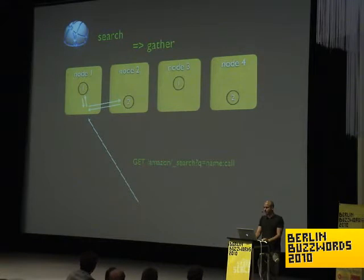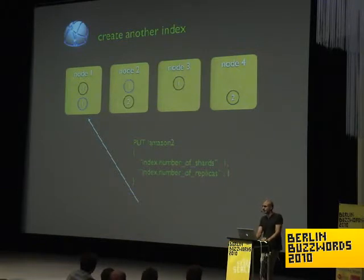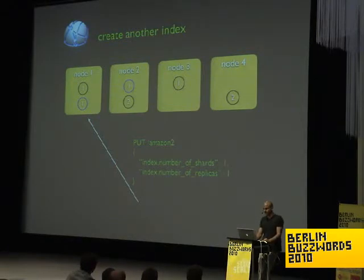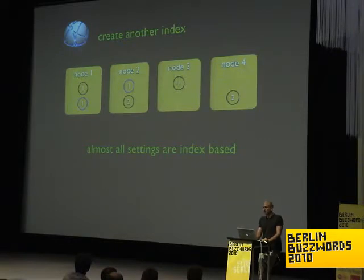An example of Elasticsearch's multi-tenancy: you can create another index called 'Amazon 2' with one shard and one replica. Elasticsearch will automatically allocate those shards on available nodes, and now you have two indices. Think of the ability to create two MySQL databases. Each index can also have different types, which maps into tables. Almost all settings are index-based — you can configure analyzers and everything through an API, which makes it very easy to manage.